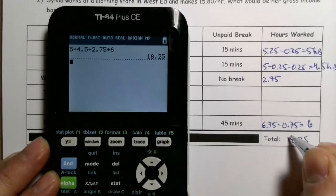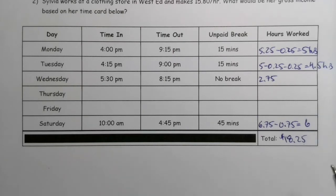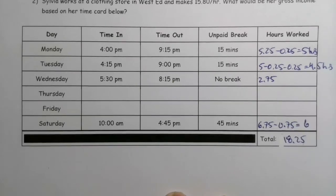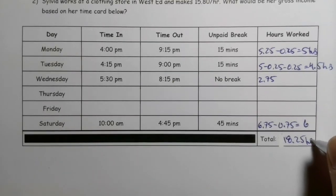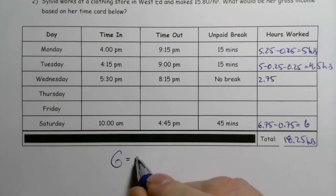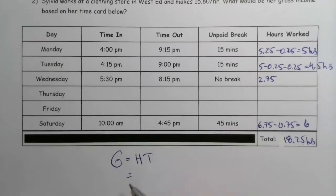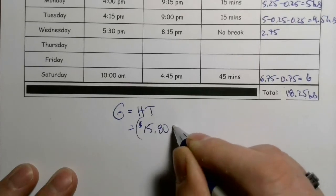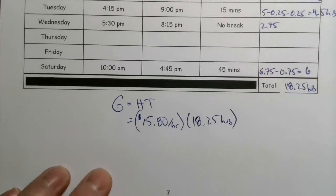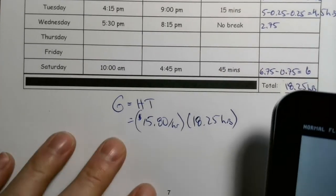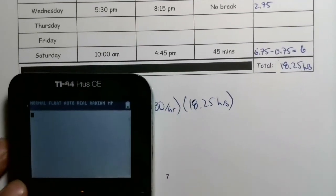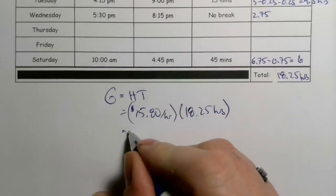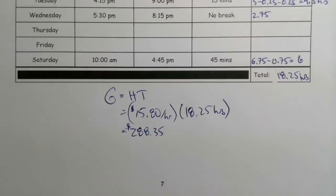So this week we get five hours plus 4.5 plus 2.75 plus six, and we get 18.25 hours total. Now we're going to convert that into gross pay. We take the hourly wage of $15.80 and multiply by 18.25 hours. 15.80 multiplied by 18.25 gives us $288.35, which will be Sylvia's gross pay.